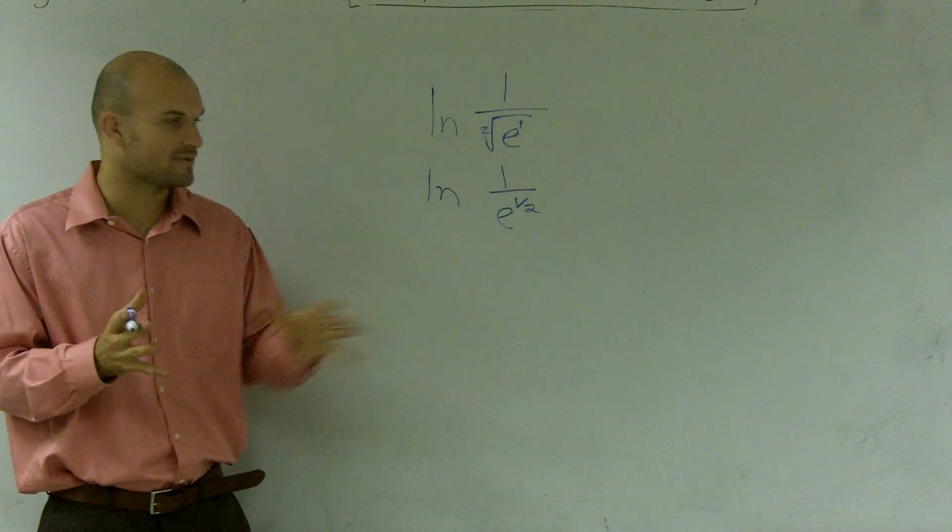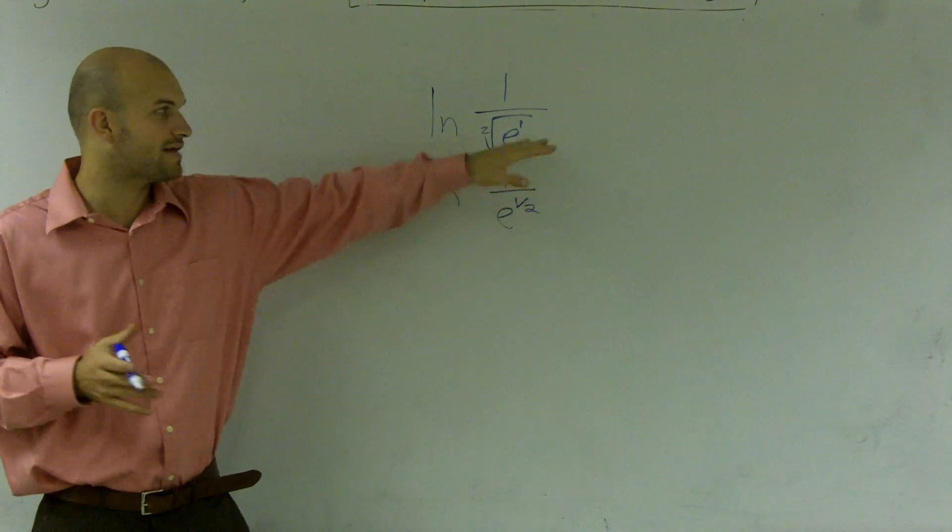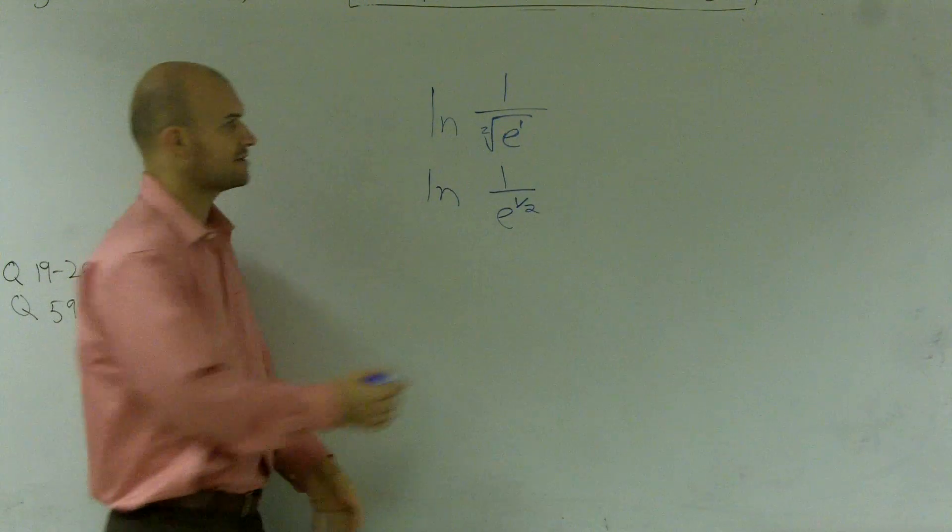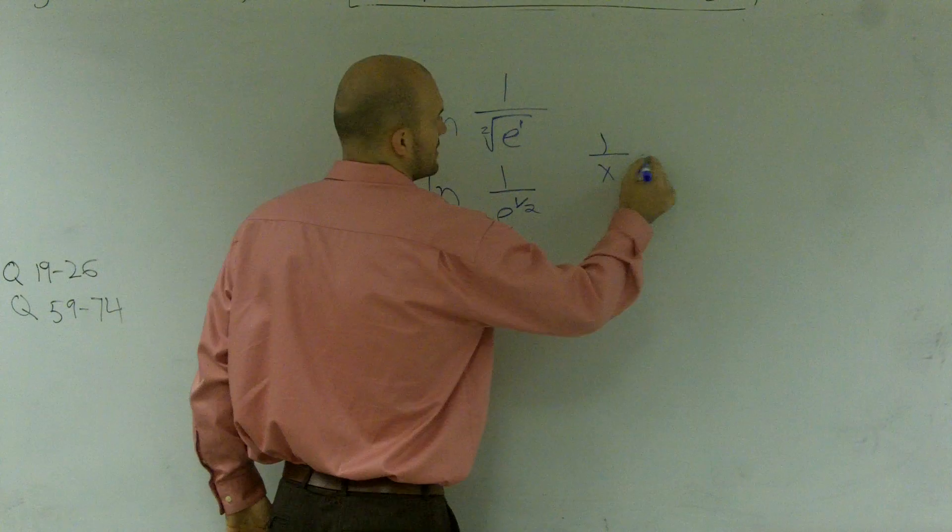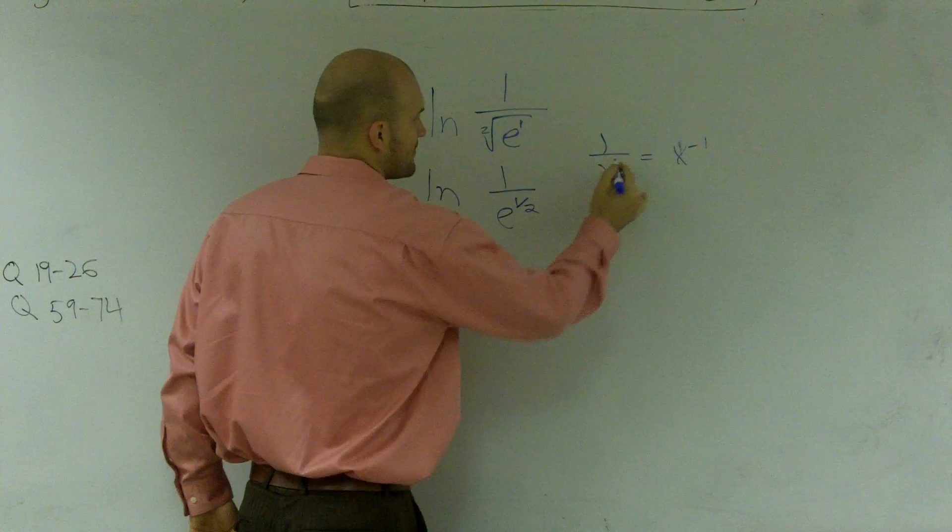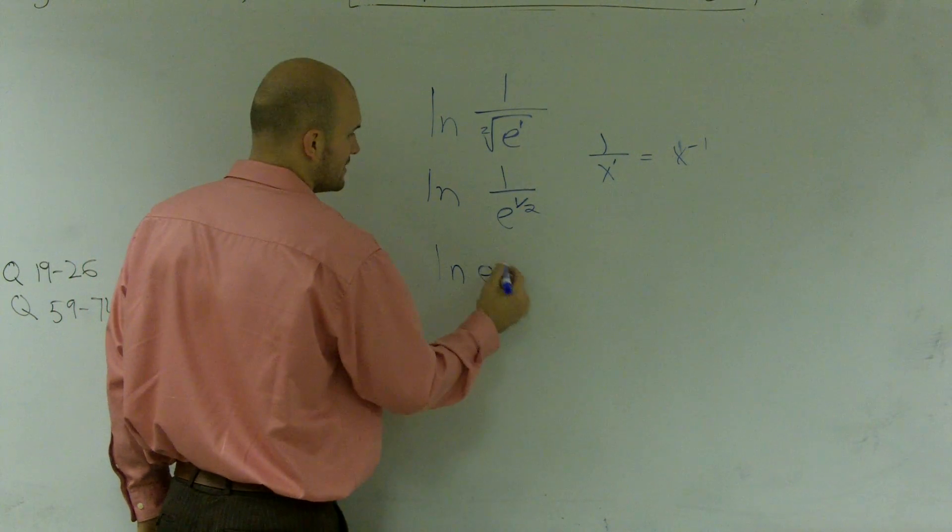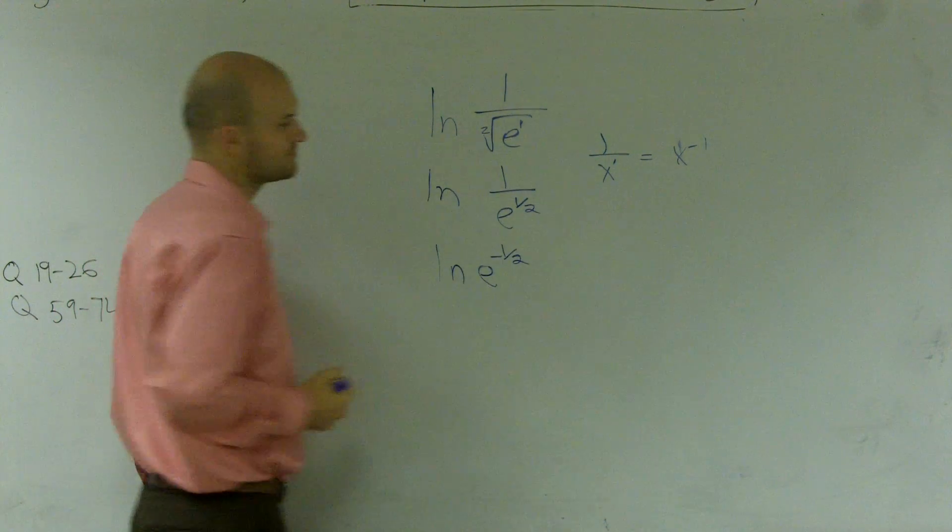Then, the next thing we talk about is whenever you have something on denominator, to put it up there as a numerator, you have to have the opposite. Now, it's going to be negative now, right? Because I showed you guys one over x, same thing as x to the negative first power. So now, I can rewrite this as ln of e to the negative one-half. Right?